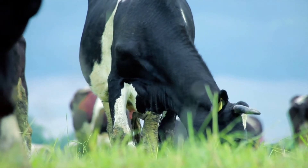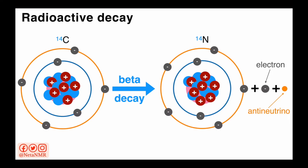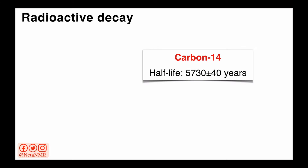But this all changes when the organism dies and the exchange with the atmosphere stops. That's when we start seeing the decay of carbon-14. Carbon-14 decays through a radioactive decay called beta decay. Through this process, the unstable carbon-14 isotope transforms into nitrogen-14, a stable isotope of nitrogen. There is also a release of an electron and an antineutrino during this radioactive decay process, though those two particles are outside the scope of this video. What we are interested in is the decay of carbon-14 into nitrogen-14.